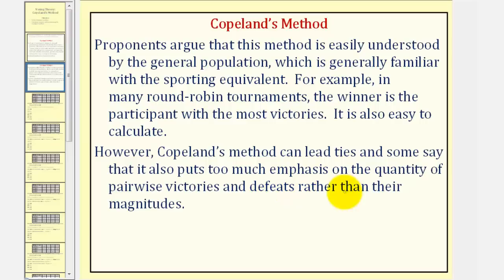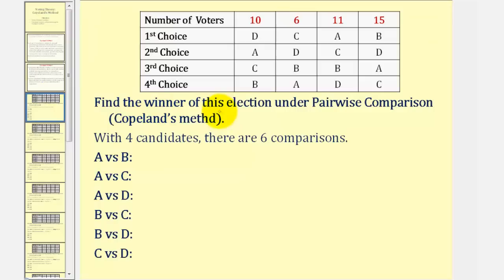Let's take a look at an example. Using the given preference table, we want to find the winner of this election using pairwise comparison or Copeland's Method. Notice if we sum the first row, there are a total of forty-two votes, and because there are four candidates, we'll have six comparisons: A versus B, A versus C, A versus D, B versus C, B versus D, and C versus D.